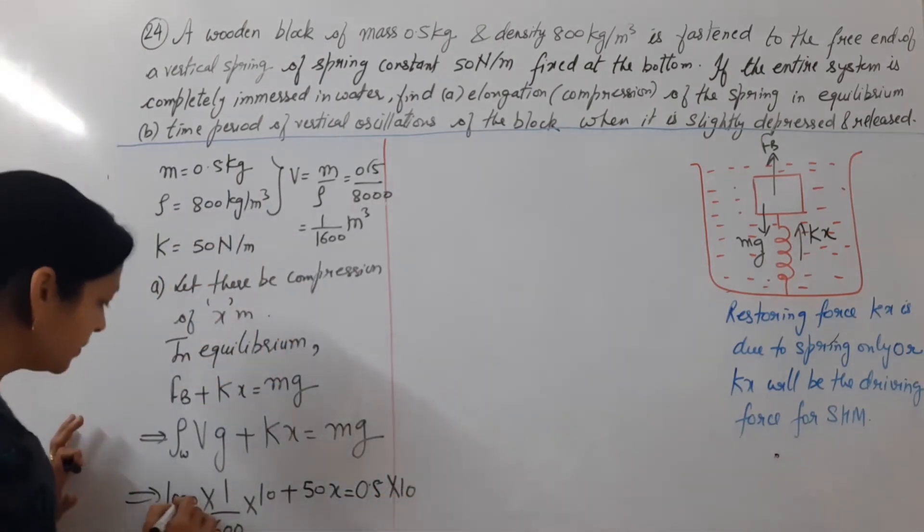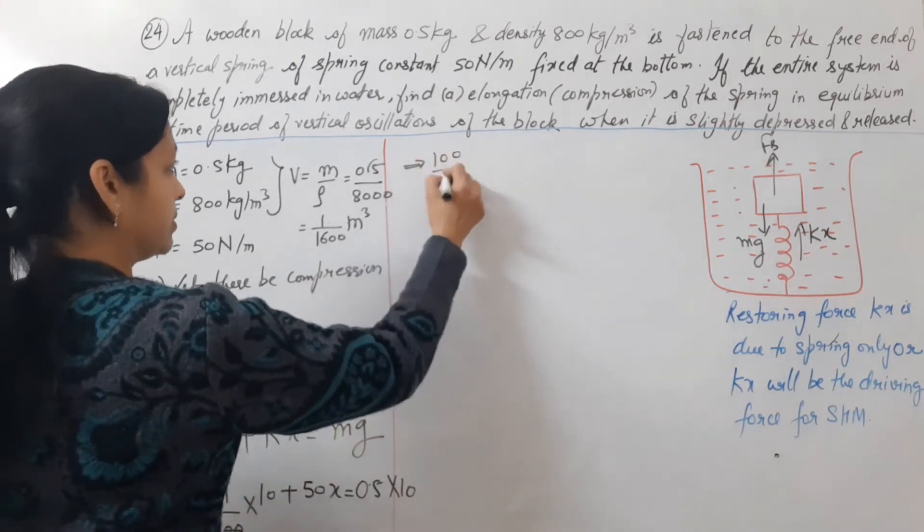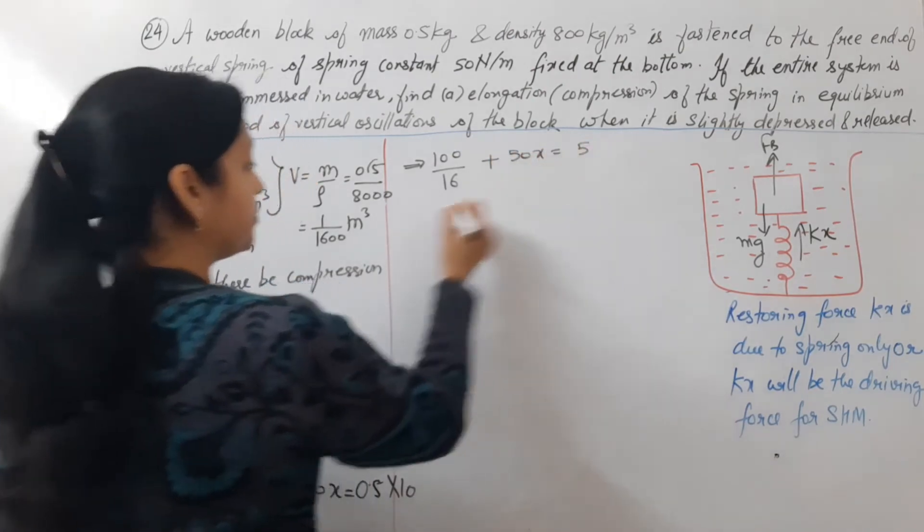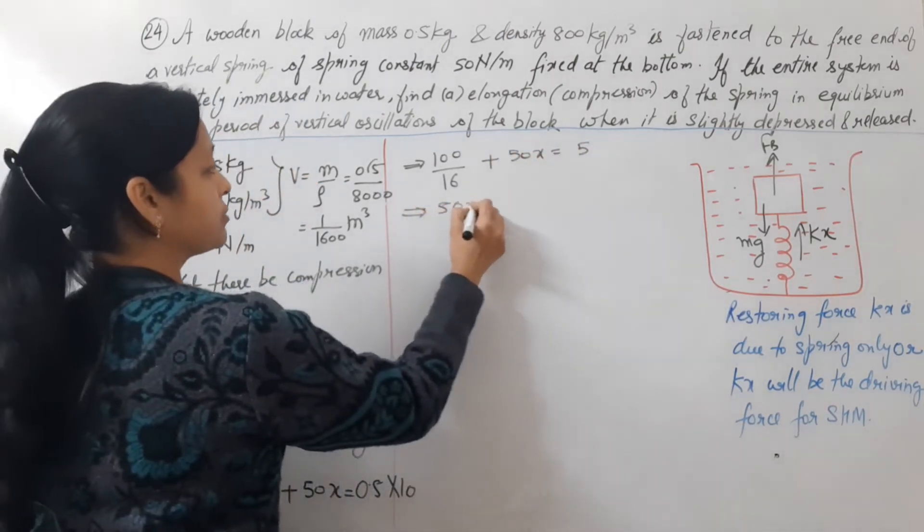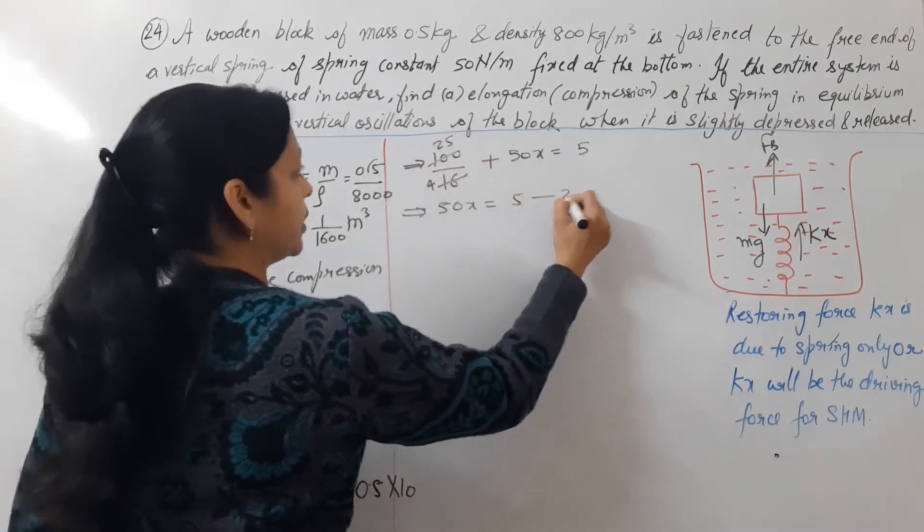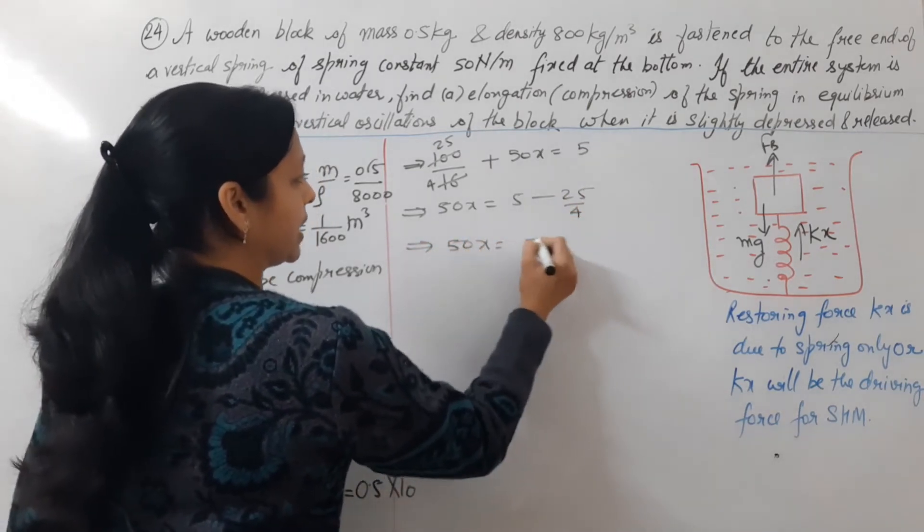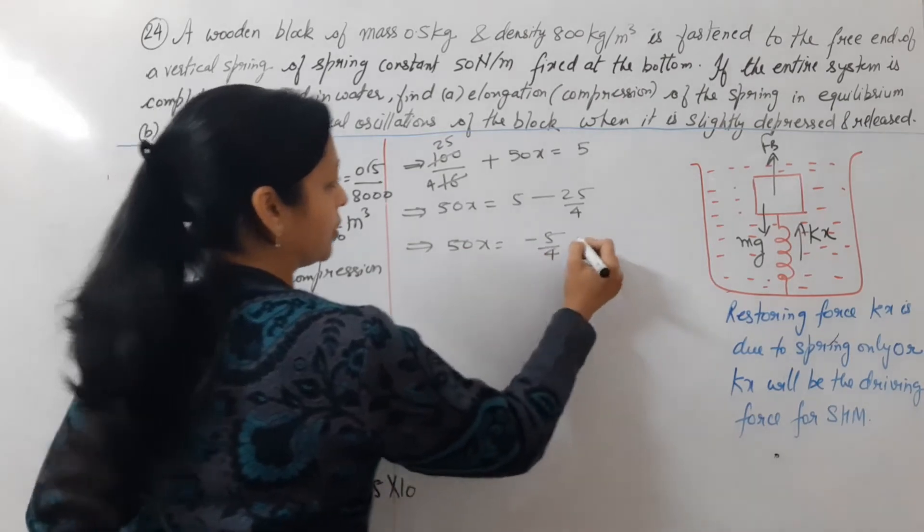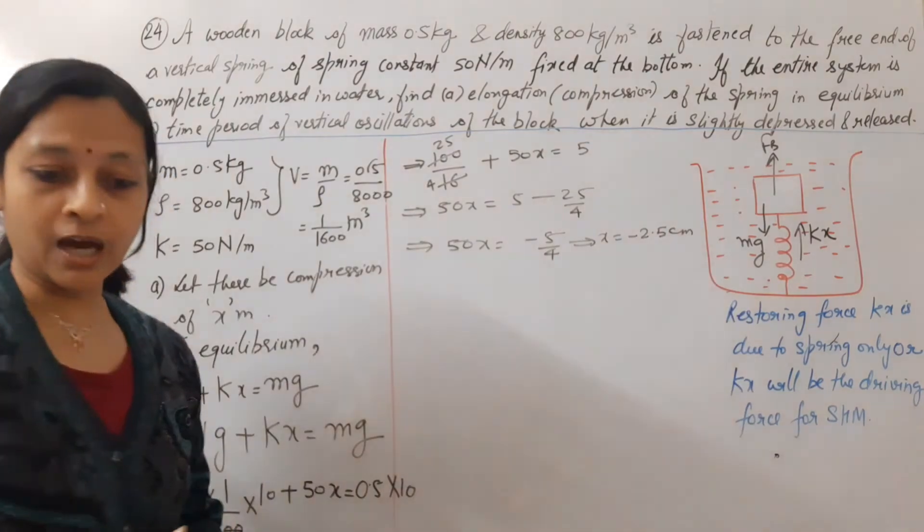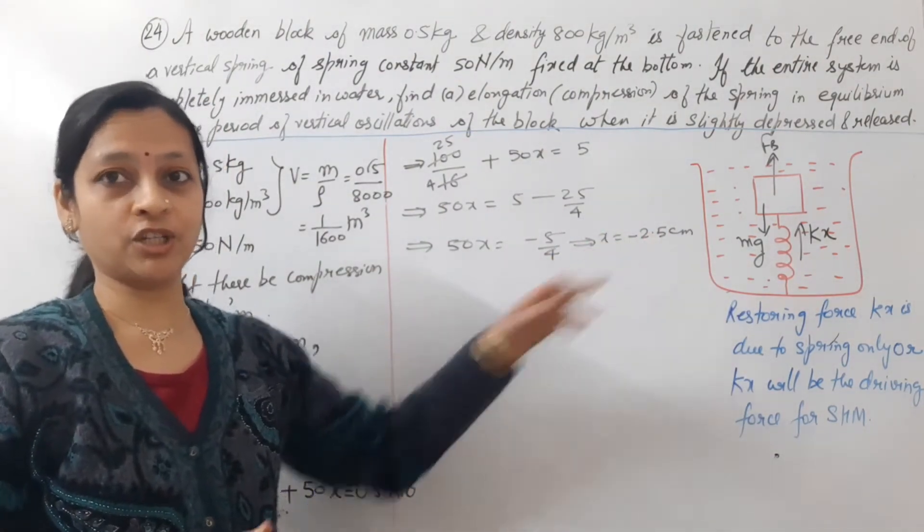Let's solve this. 100 by 16 plus 50x equal to 5. So 50x will be 5 minus 25 by 4. That means this becomes minus 5 by 4. And if we solve this, minus 2.5 centimeter. We see here our answer is negative. It was not compression, it was elongation.